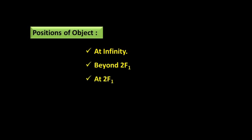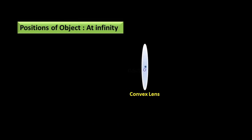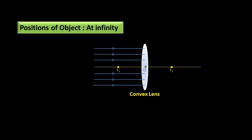Positions of object at different places: object at infinity, object beyond 2F1, object at 2F1, object between 2F1 and F1, object at F1, and object between F1 and optical center O. For the first position — object at infinity — the parallel incident rays coming from the object, after refraction, pass through focus F2.